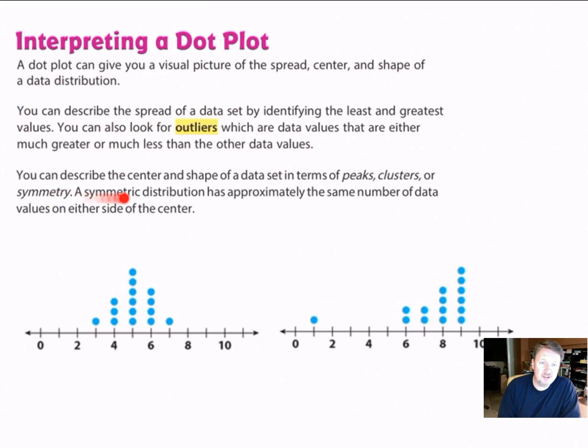Then it says you can describe the center and shape of a data set in terms of peaks, clusters, or symmetry. A symmetric distribution has approximately the same number of data values on either side of the center. So looking at this first one here, we'll notice that the data values are spread out from 3 up to 7. And there aren't any outliers. So this is a pretty uniform distribution. The data has a cluster from 3 to 7. And it has one peak at 5, which is right here. This is where most of your data sits at 5. So I can almost bet that 5 is going to be your median of the data. And so that's also the center of the distribution. And the distribution is symmetric. If we drew a little graph, you'd have the same kind of drop as you would from here to here. So it is a symmetrical distribution.